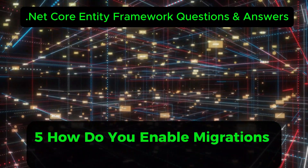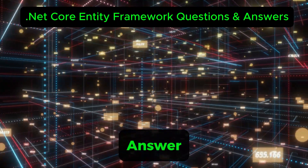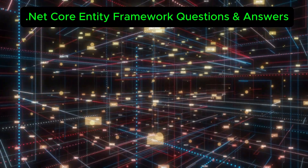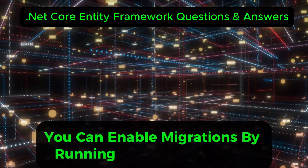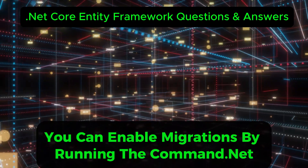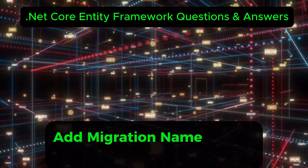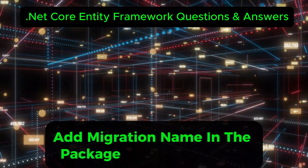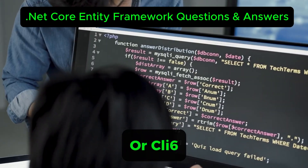How do you enable migrations in EF Core? You can enable migrations by running the command 'dotnet ef migrations add <MigrationName>' in the package manager console or CLI.